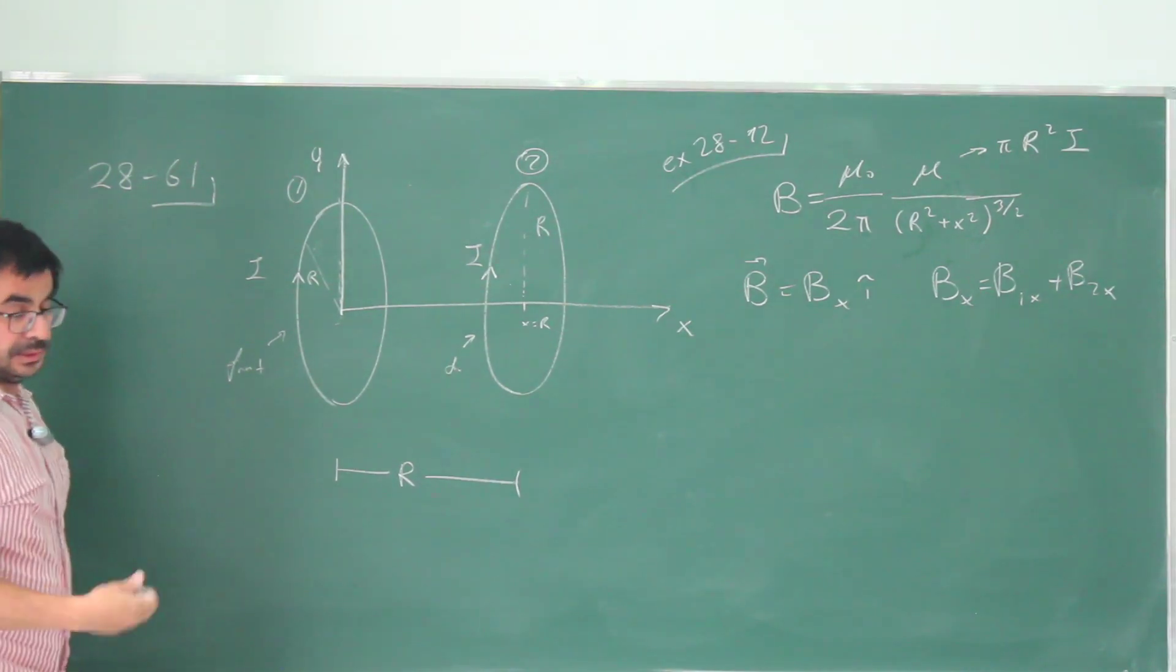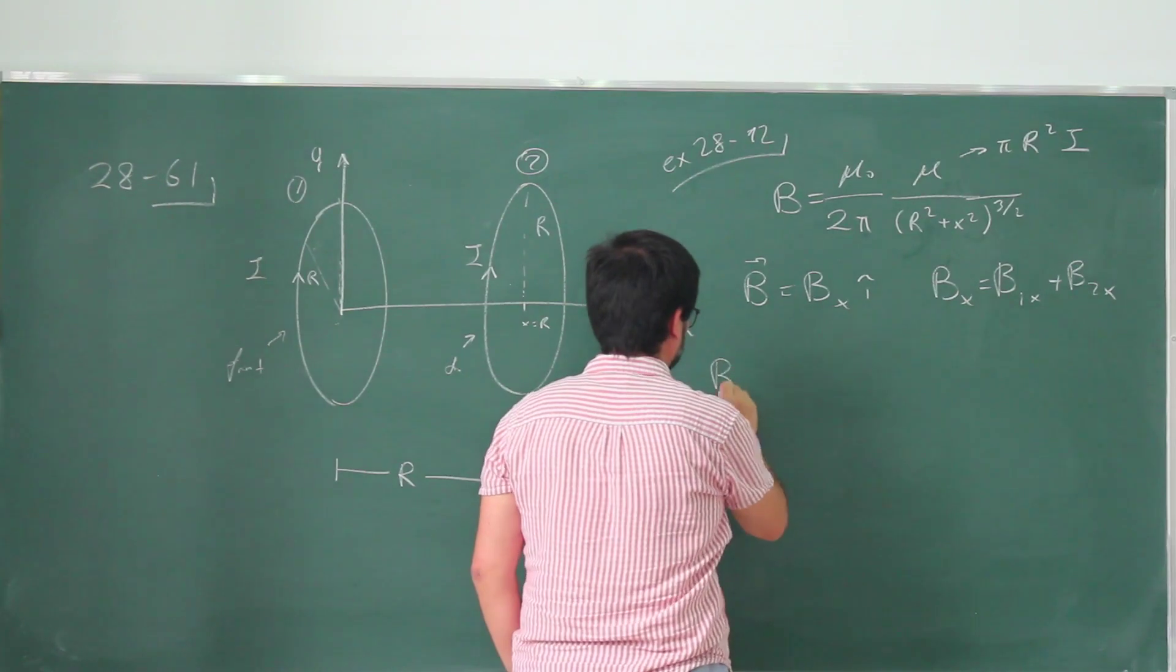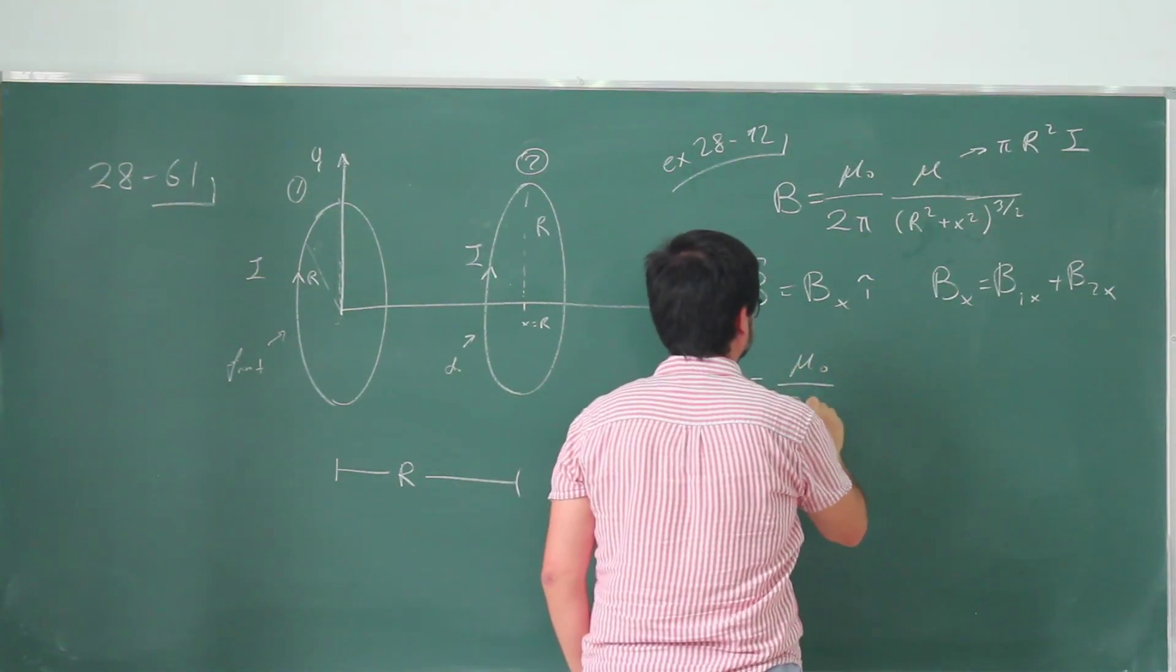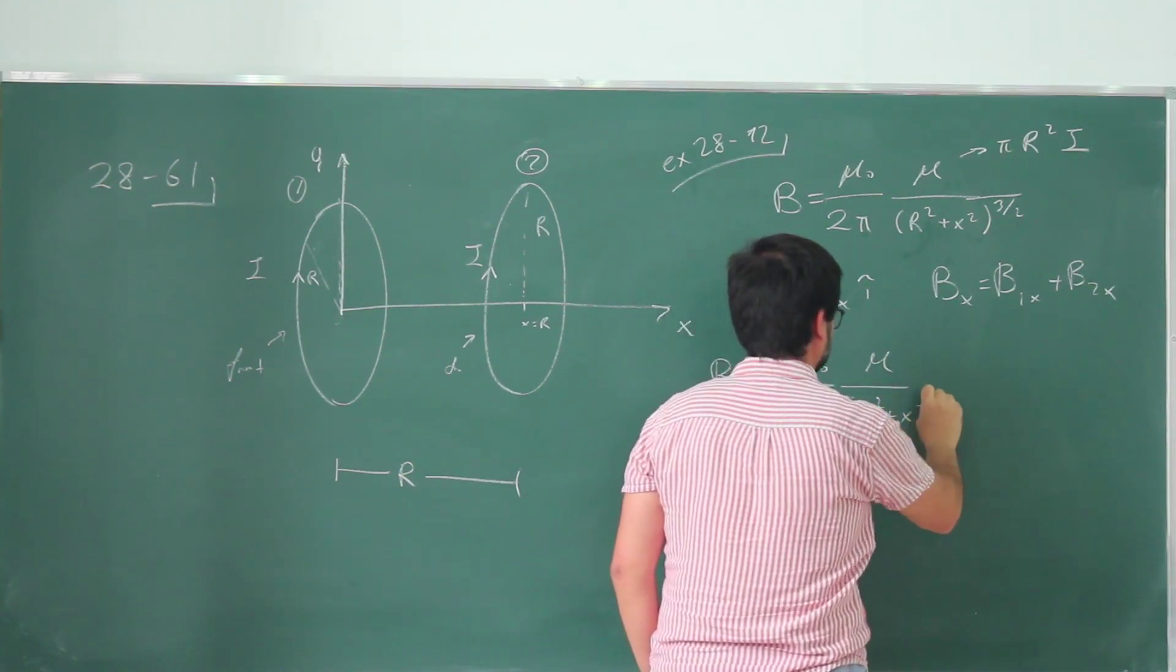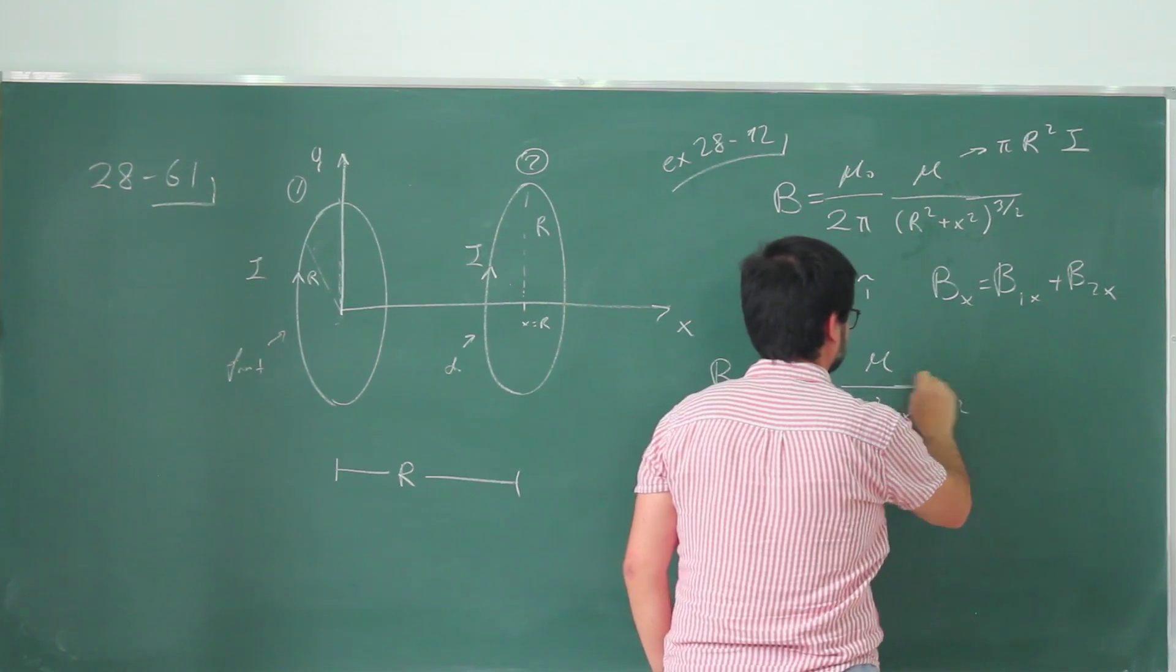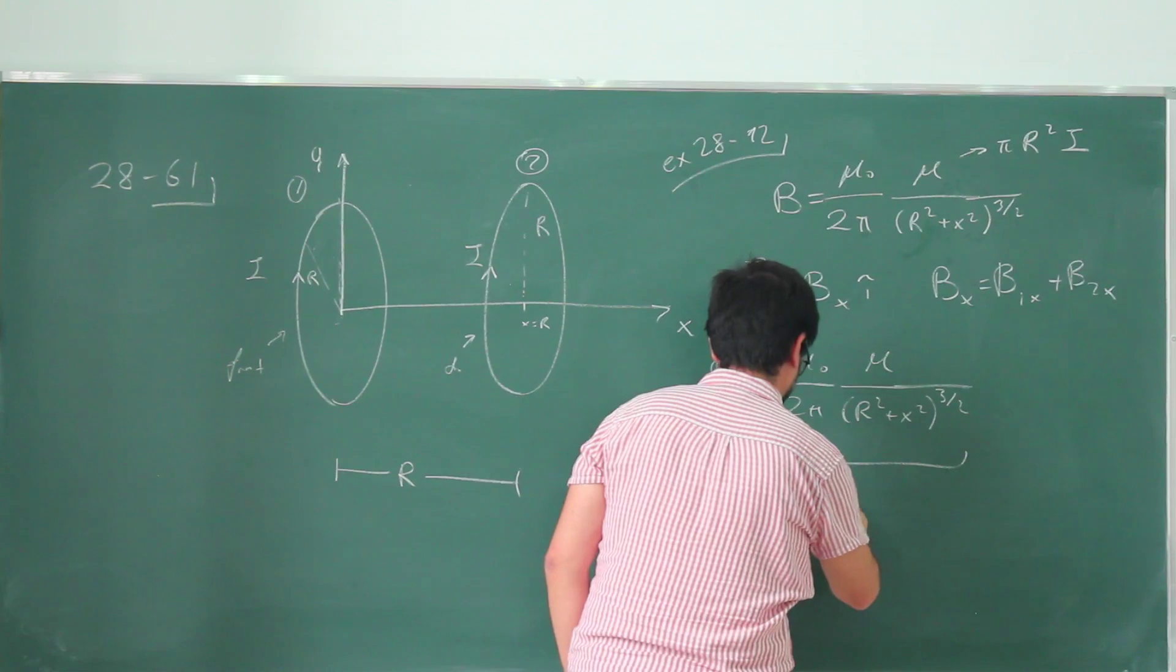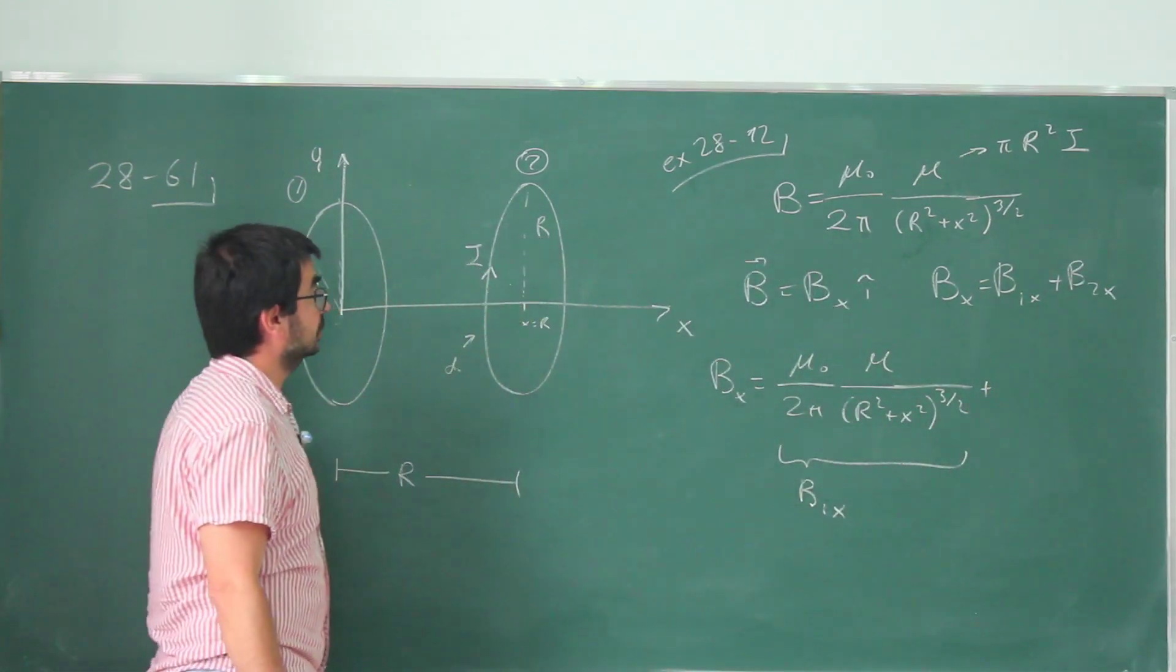Now I can write B1x directly. It's just this one. So Bx is mu naught over 2 pi, mu over R squared plus x squared to 3 halves. So this one is B1x, and then I need to write an expression for this one.